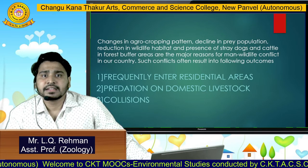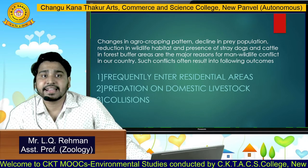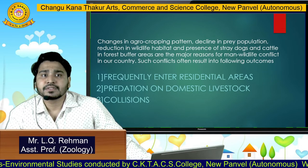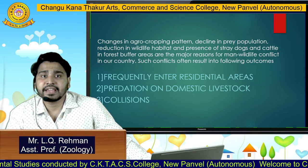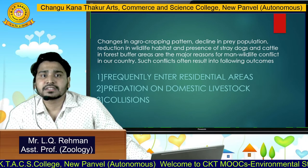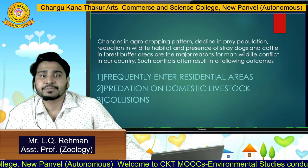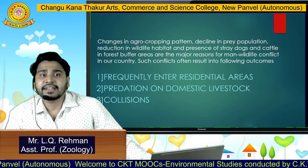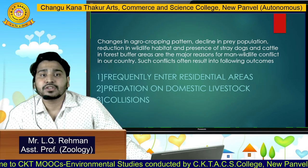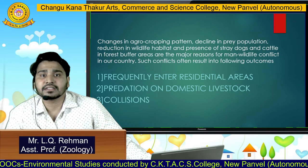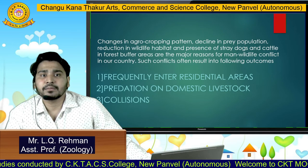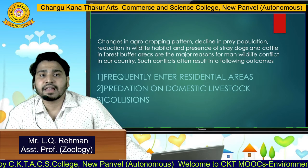What leads to them? Changes in agro-cropping pattern, decline in prey population, reduction in wildlife habitat, and presence of stray dogs and cattle in forest buffer areas are the major reasons for man-wildlife conflict in our country. Such conflicts often result in wild animals or wild cats frequently entering human residential areas and preying on domestic livestock, causing damage to farmers economically and loss of livestock.